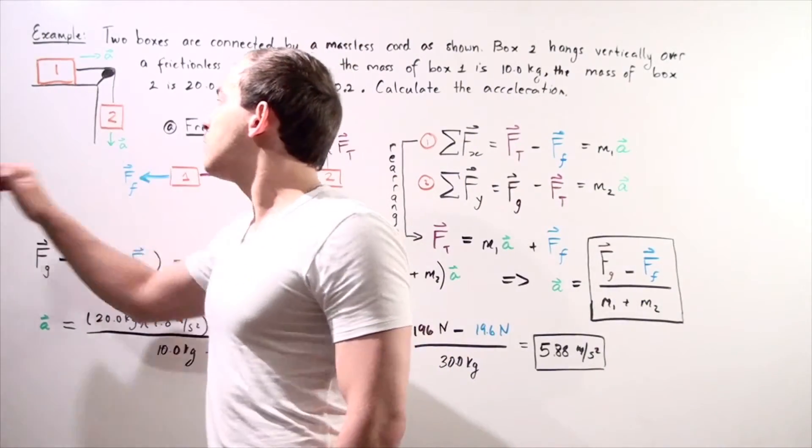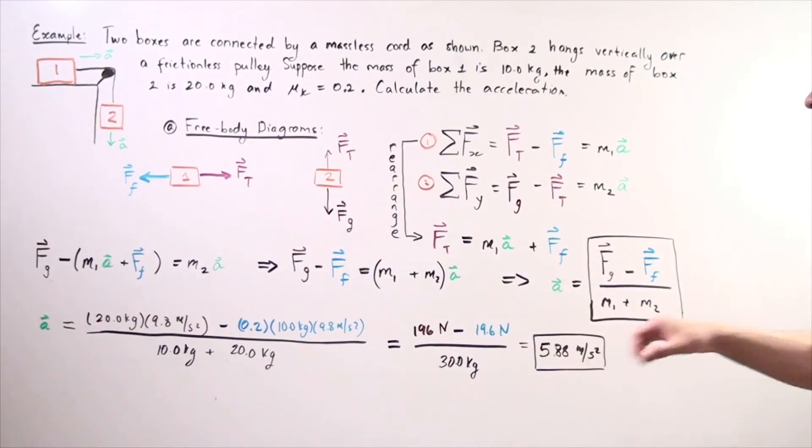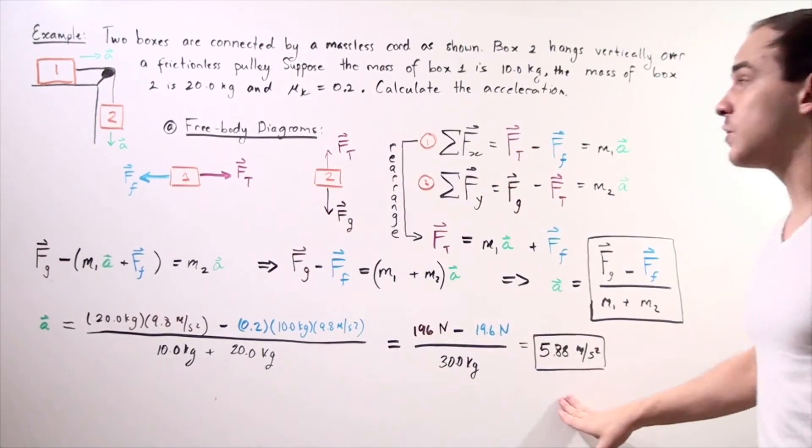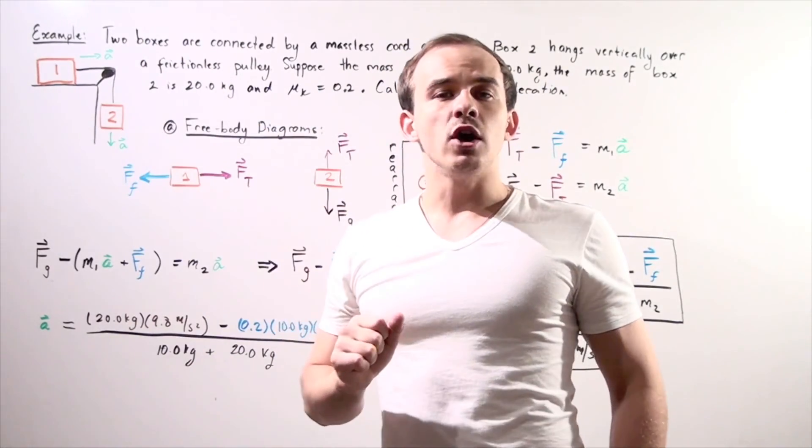Box one is traveling in the positive direction along the x axis with this acceleration and box number two is traveling with this same magnitude acceleration but it's traveling vertically downward along the y axis.